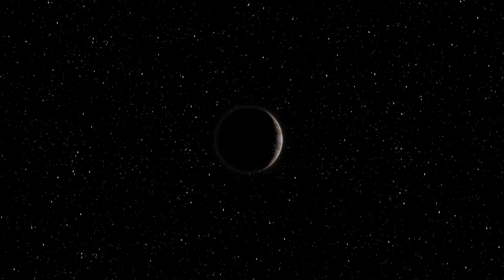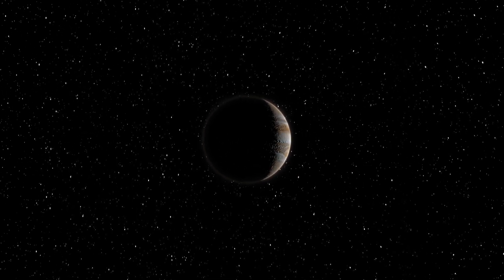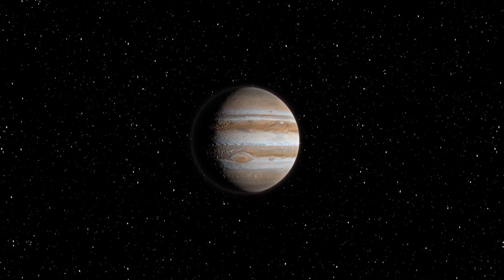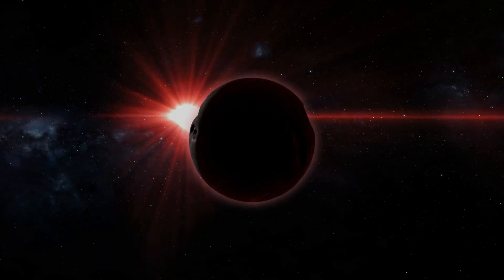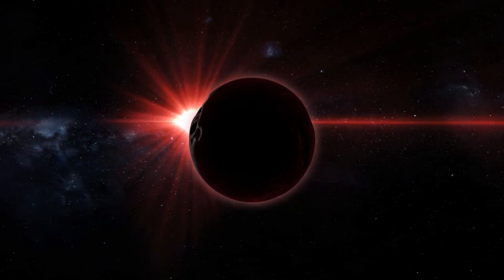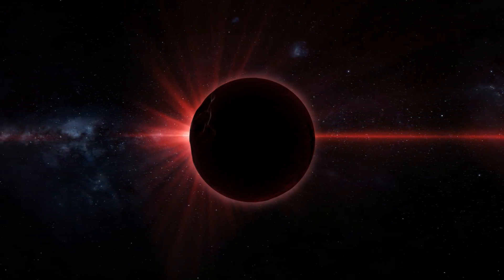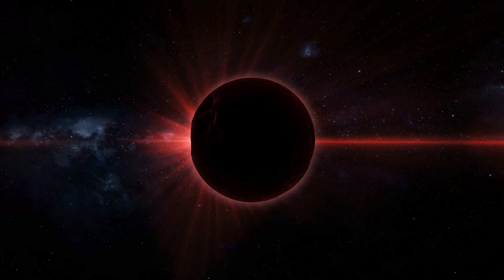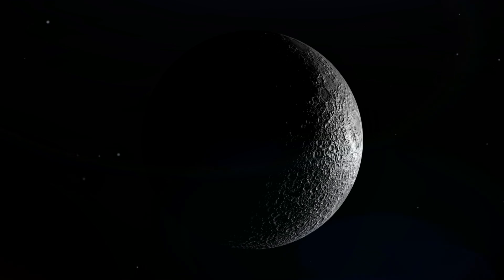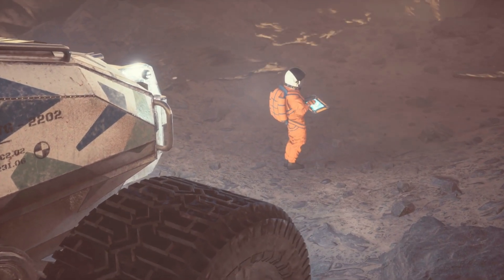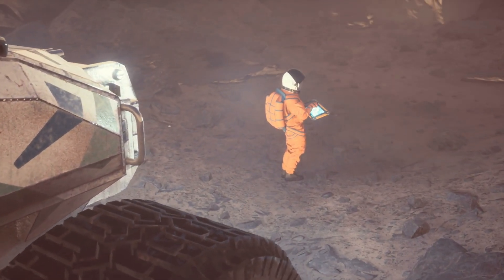But unlike Jupiter, which reflects a significant amount of sunlight, TrES-2b absorbs almost all light that falls upon it. We're talking about a reflectivity rate of less than 1%, making it blacker than coal, blacker than asphalt, even blacker than the blackest acrylic paint. To put that in perspective, our Moon, which we often think of as being quite dark, reflects about 12% of the sunlight that hits it.